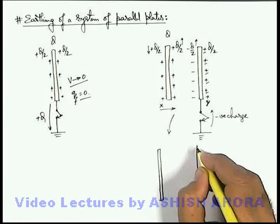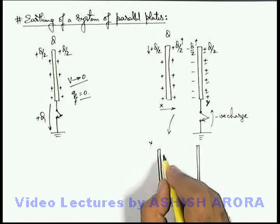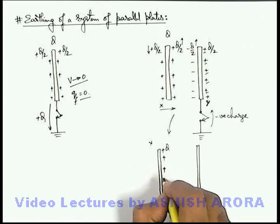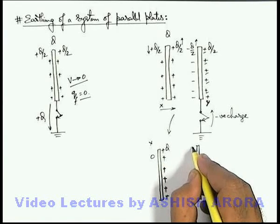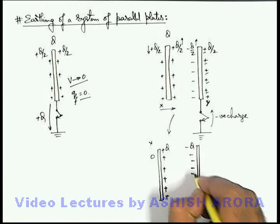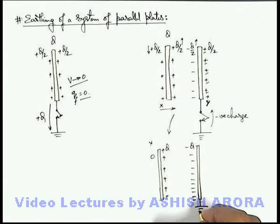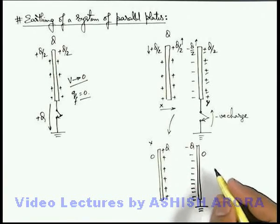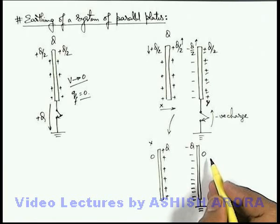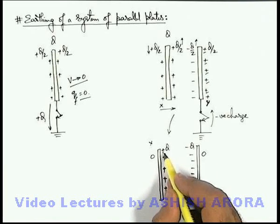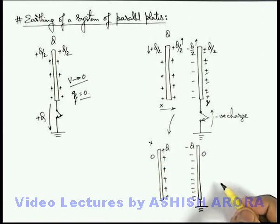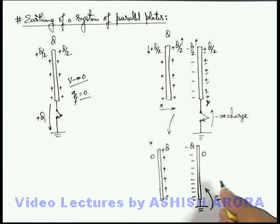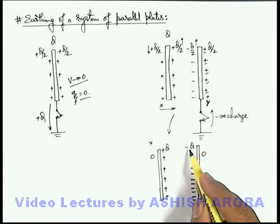So the final situation will be: the total charge on plate X will be plus q on the right face and net zero on the left face — this is because of the earthing of the second plate. On the left side of plate Y the charge will be minus q, which is actually supplied by the earth connection, and on the right side it'll again be zero. No more charge transfer or distribution will take place, because the whole flux of this plus q will now terminate onto plate Y. The total charge supplied by earth to plate Y will be minus q, because earlier the plate was neutral and now it is carrying a charge of minus q.